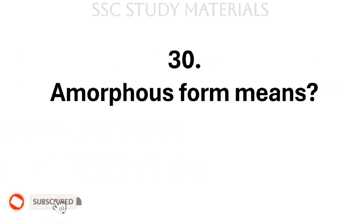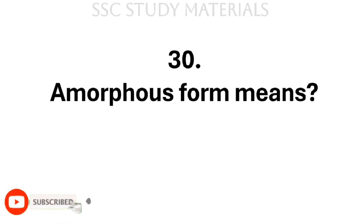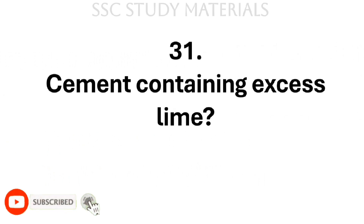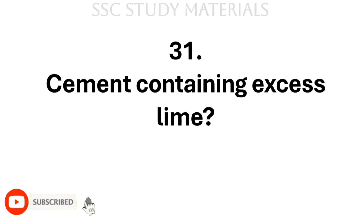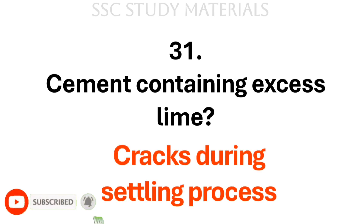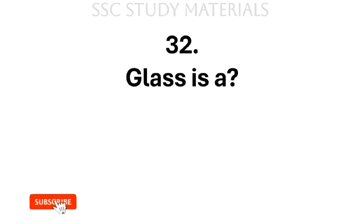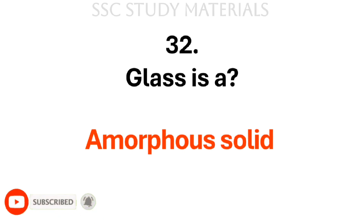Question No. 30: Amorphous form means? Answer: It means lacking definite shape and form. Question No. 31: Cement containing excess lime? Answer: Cracks during the settling process. Question No. 32: Glass is a? Answer: It is an amorphous solid.